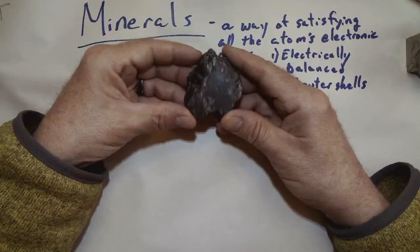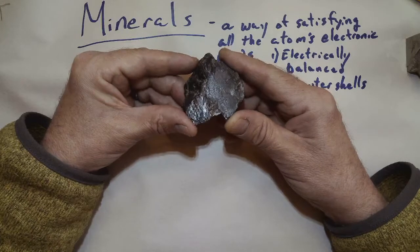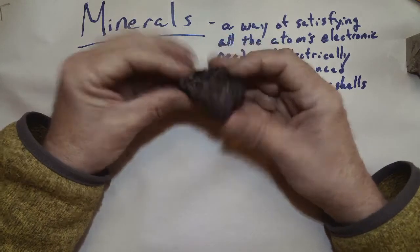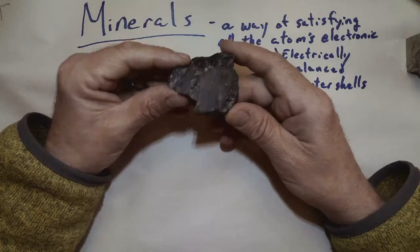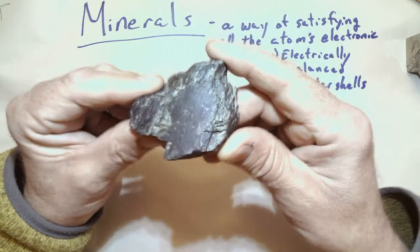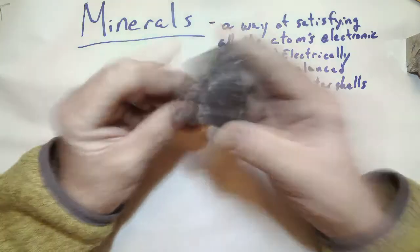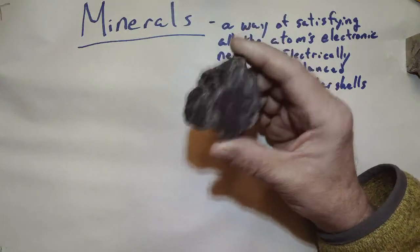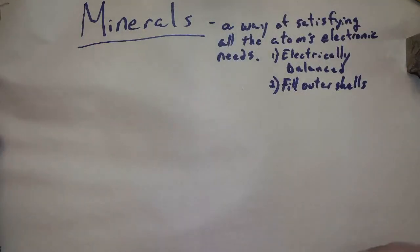This is plagioclase feldspar. And if I catch the light just right, I don't know if you'll be able to see it, but it does this beautiful thing called labradorescence. It's a type of feldspar called labradorite. And it has this notable shine to it. I'm not thinking you're going to be able to see it. But if you come over to my house in person, I'll show this to you. Wait a year or so, but it's beautiful.